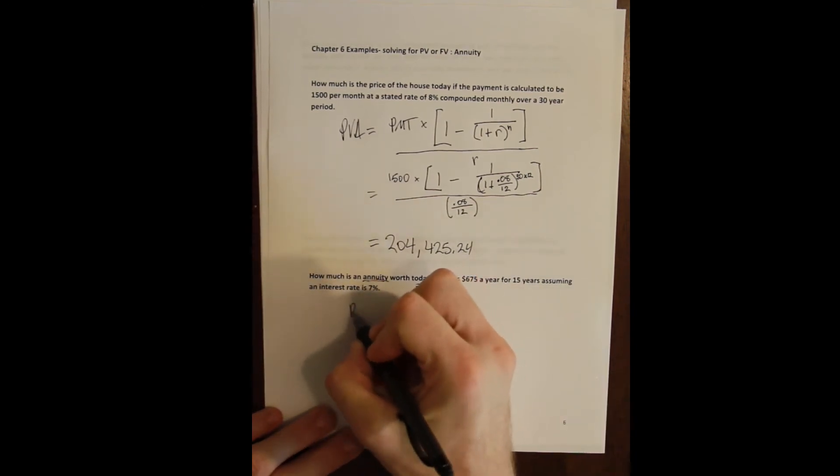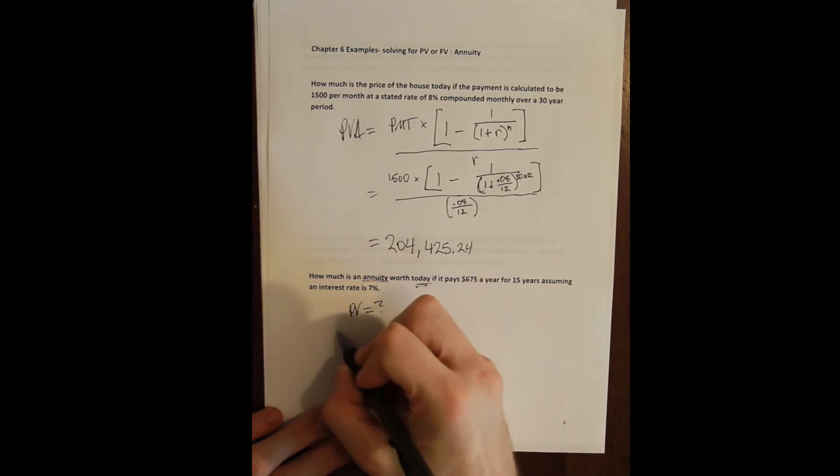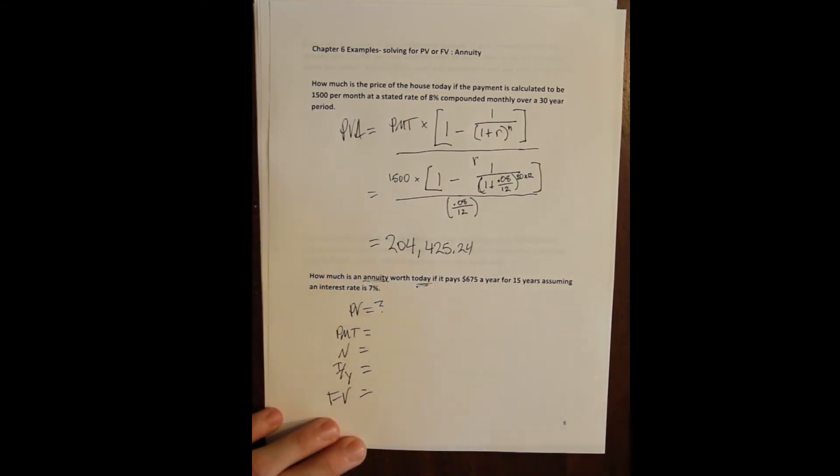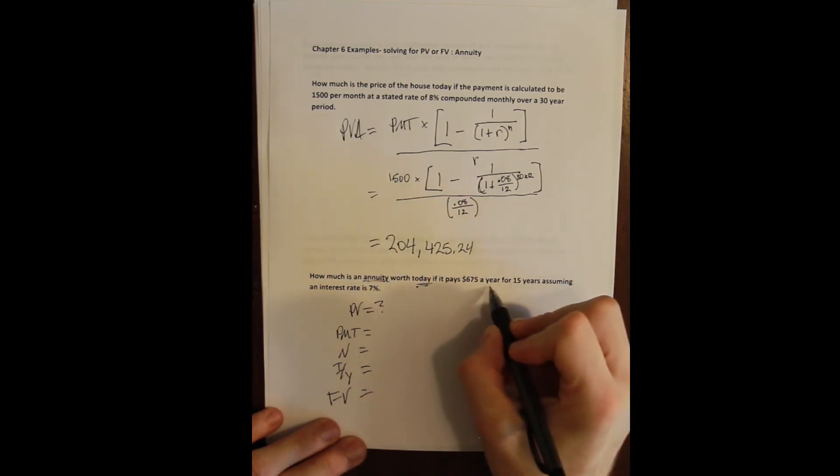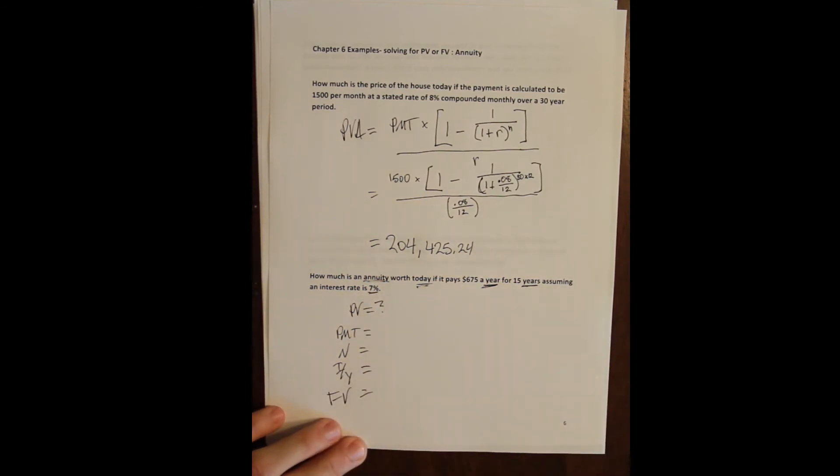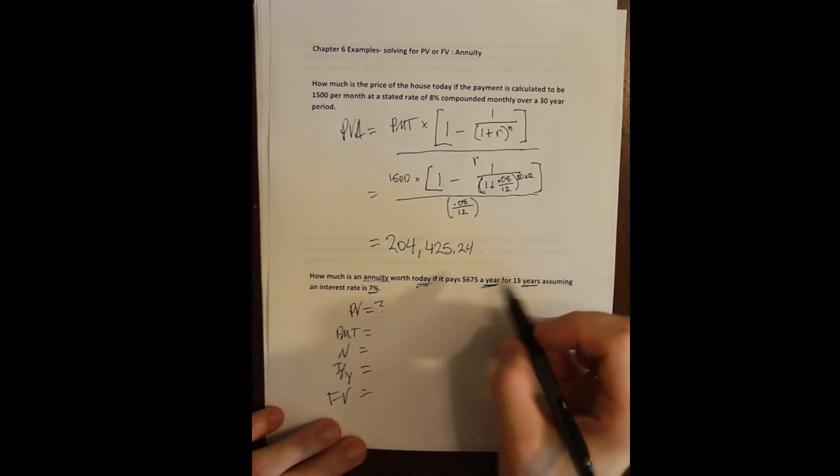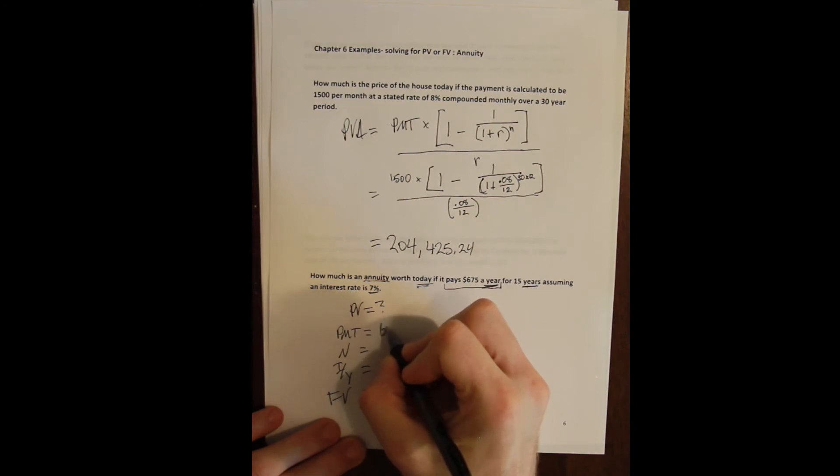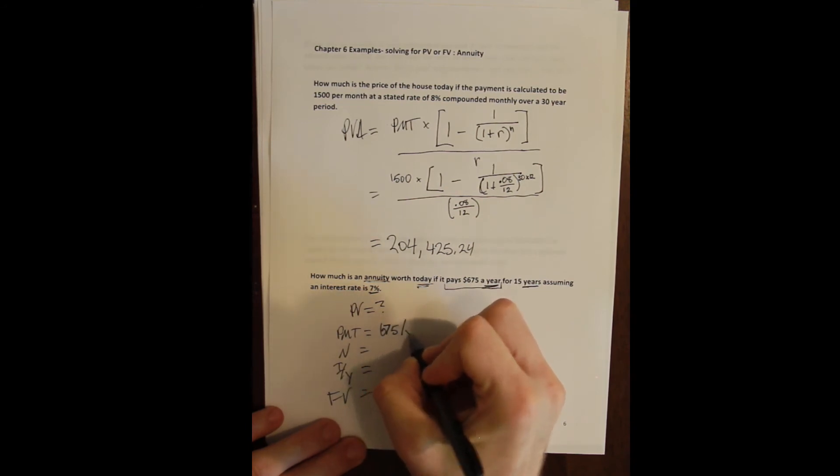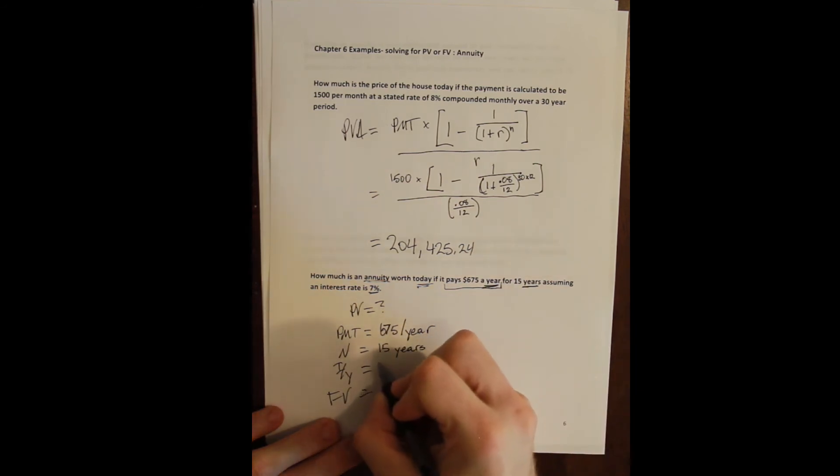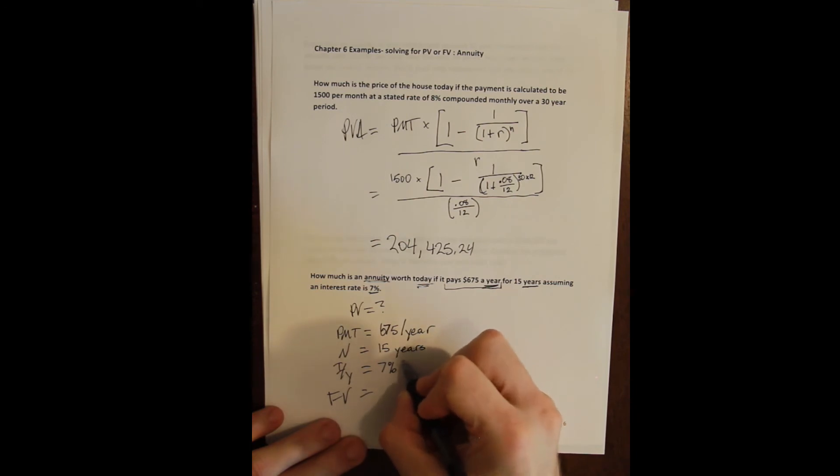Okay, so we want the present value. We need to know the payment, the number of periods, the rate, and the future value. So the compounding period is a year. We have years here, and we have a stated rate in years. We don't have any information otherwise, so the compounding period is a year. It pays us $675 a year, so that's a cash inflow, a positive $675 a year. It's going to do so for 15 years and earn a rate of 7% per year.